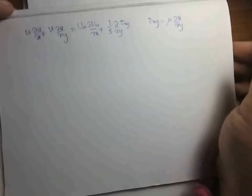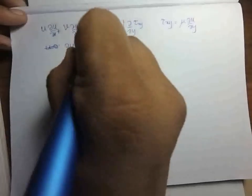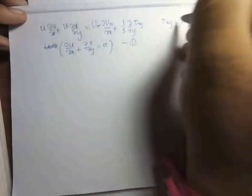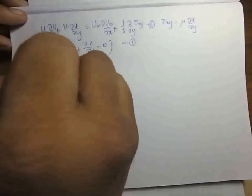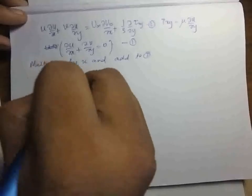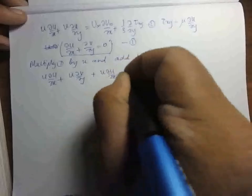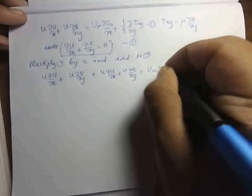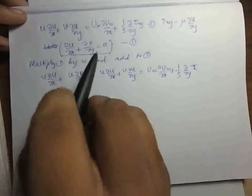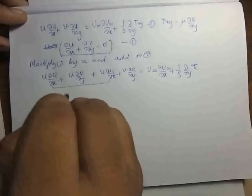The continuity equation is del u / del x plus del v / del y equal to 0. We multiply the continuity equation by u and add it to the momentum equation. The left-hand side gains u (del u / del x) plus u (del v / del y), which is essentially adding zero. These terms combine: the two u (del u / del x) terms give 2u (del u / del x), which can be written as del/del x of u², plus del/del y of (uv), equaling u_infinity (del u_infinity / del x) plus (1/rho)(del/del y) of tau.